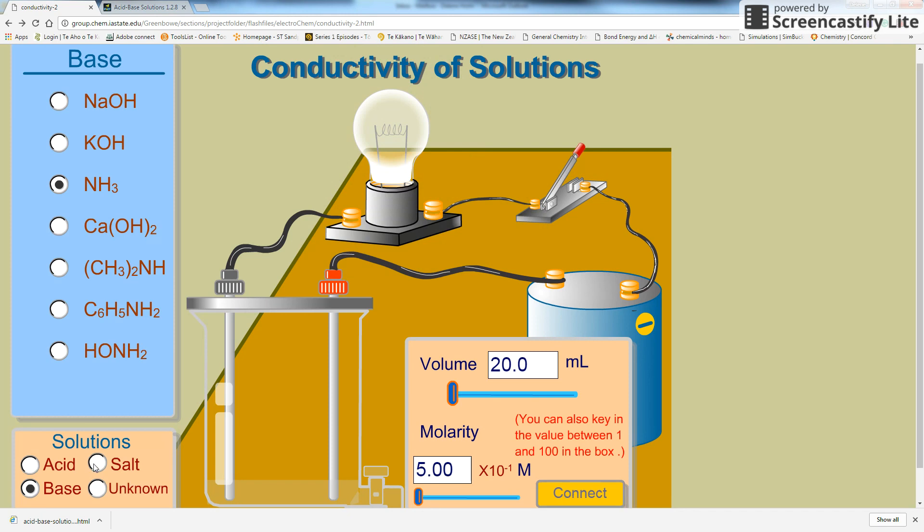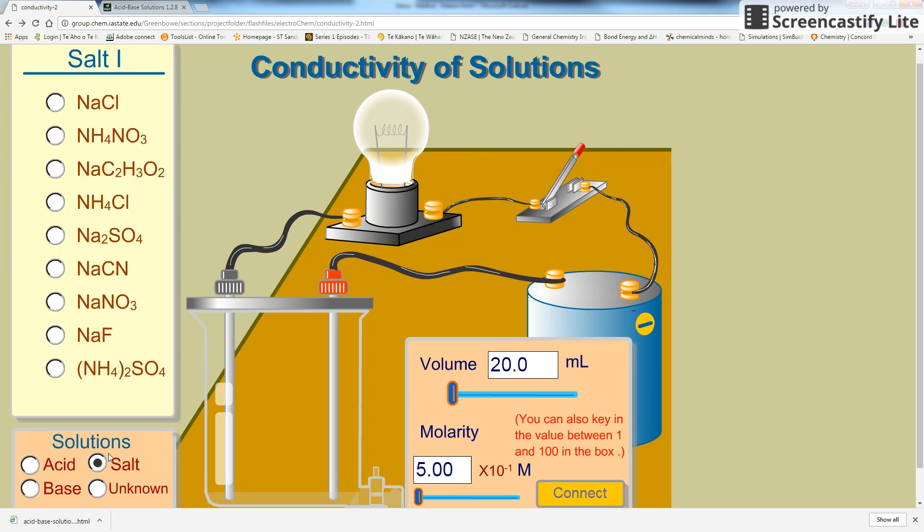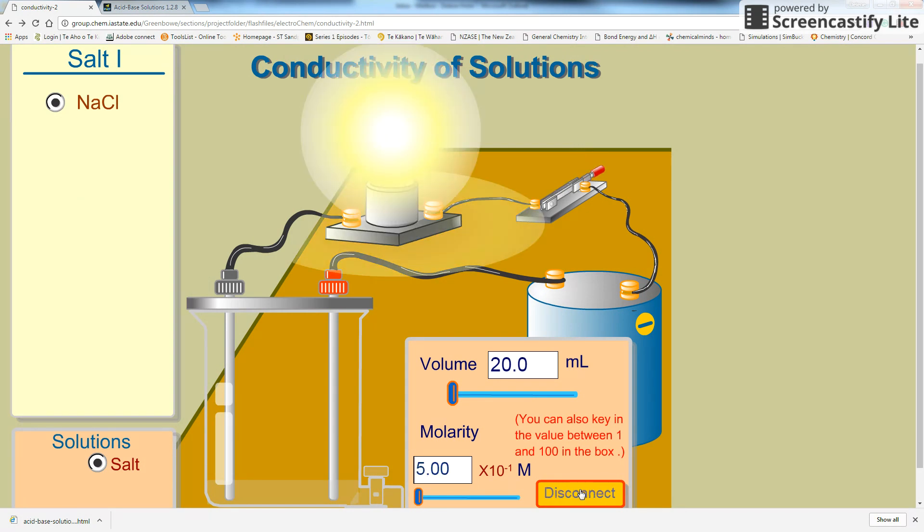So you can explore all those. The salt is, you would expect salts to always make that light bulb glow brightly, because if the salt dissolves completely in a solution, then it will have broken up into its cation and anion, and so there'll be lots of ions present in solution. So you would expect all salts to glow brightly.